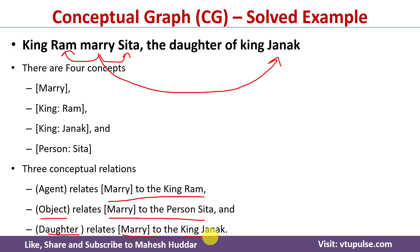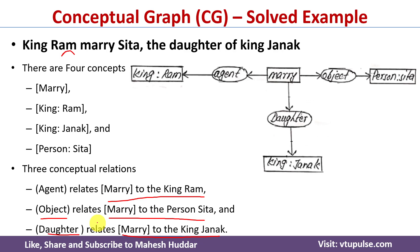Once you identify the concepts and the conceptual relations, we need to draw the conceptual graph. As said in the previous video, the concepts are represented with rectangles and the conceptual relations are represented with either circles or ovals. In this case, we have four concepts: Mary, King Rama, person Sita, and King Janaka — all represented with rectangles.